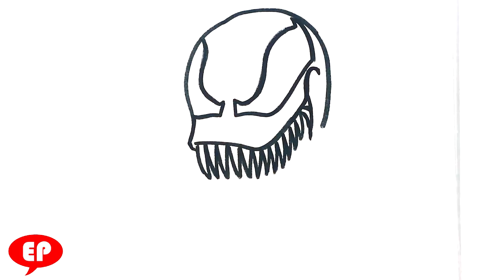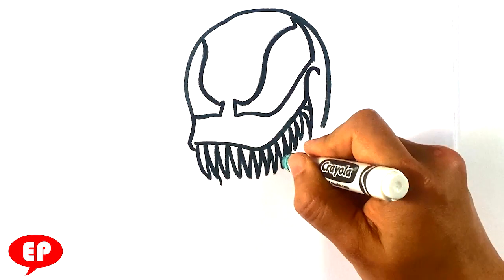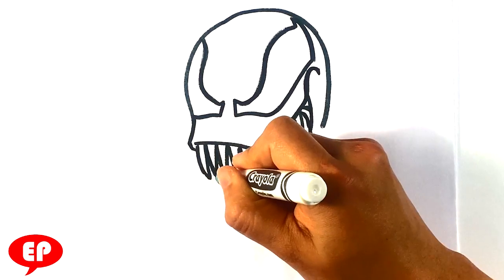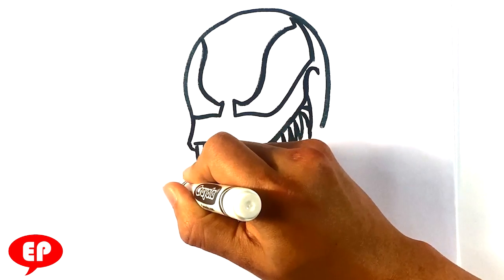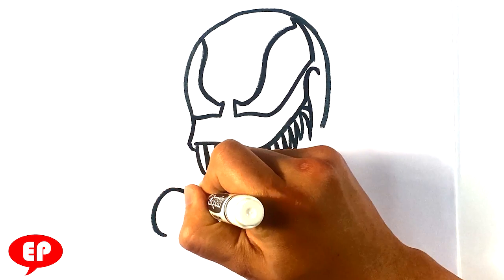Let's pull down and now we got the tongue, which is another giant Venom thing. I'm going to pull a line here, out, down, pull an S curve out.